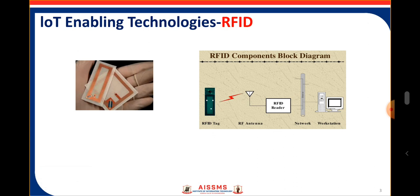Here you can see the RFID component block diagram, showing the RFID tag, RF antenna, network, and workstation. An RFID tag consists of an integrated circuit and antenna, and is composed of a protective material that holds the pieces together and shields them from various environmental conditions.